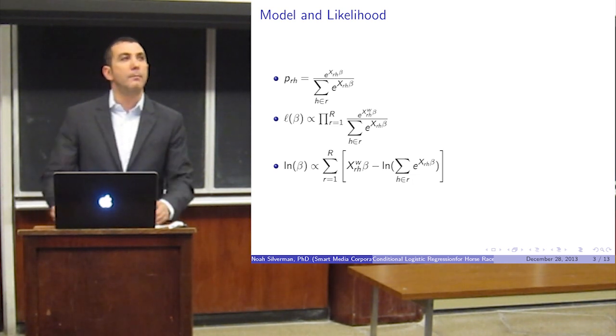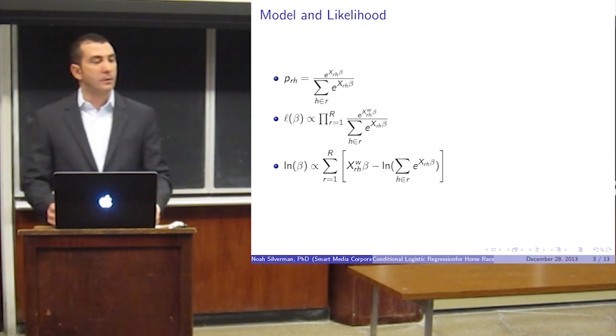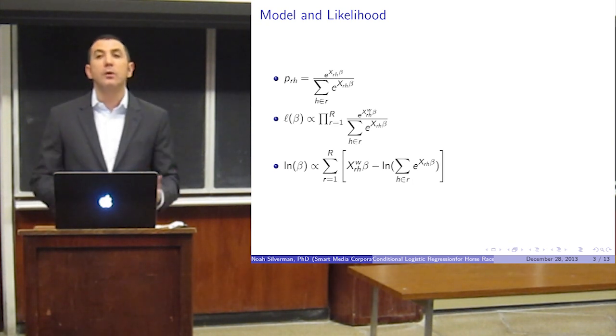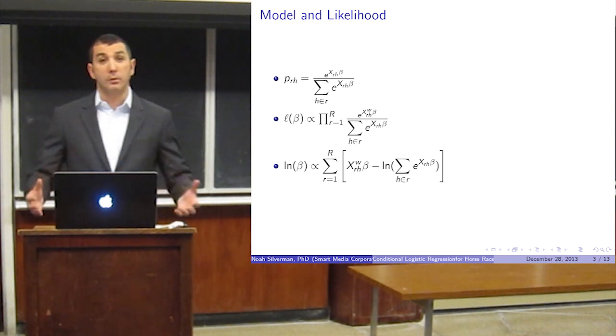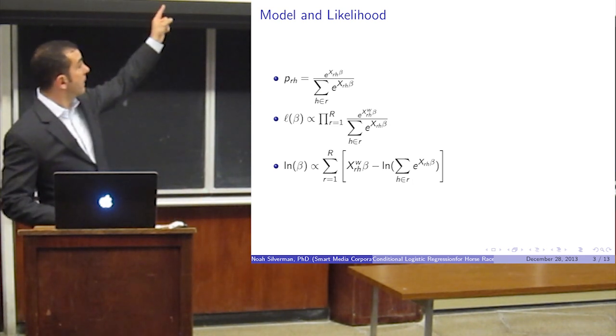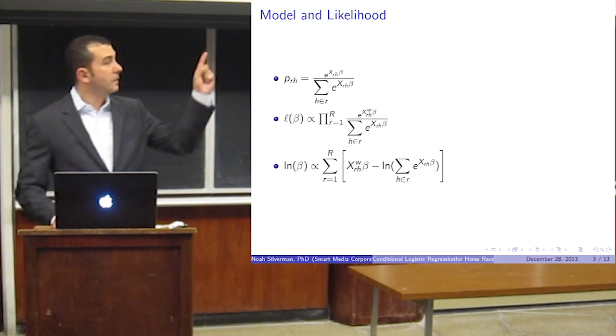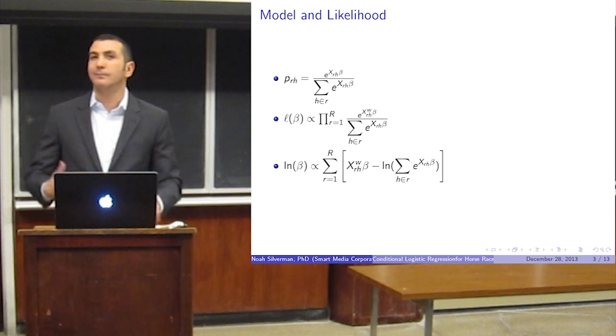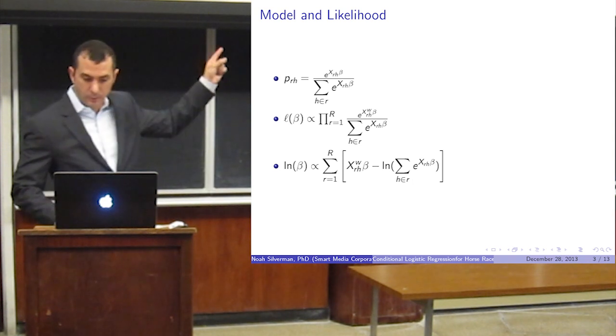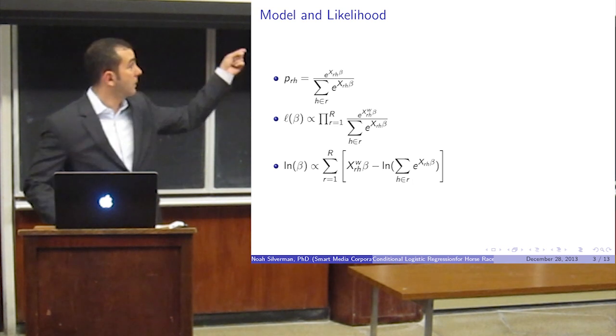The form of math that we use for that is something called a conditional logistic regression. A normal logistic regression is simply the probability of an event, and that's easy enough to calculate. Conditional logistic regression is also fairly simple. It's a logistic regression with the condition that the probabilities sum to 1. As you can see in the first equation there, that is the conditional probability. It's the e to the power of your linear combination for the winning horse over the sum of all the other horses' powers. The likelihood is right below it, and then to make the math work and cleaner, we tend to work with the log likelihood, which gives the third equation there.